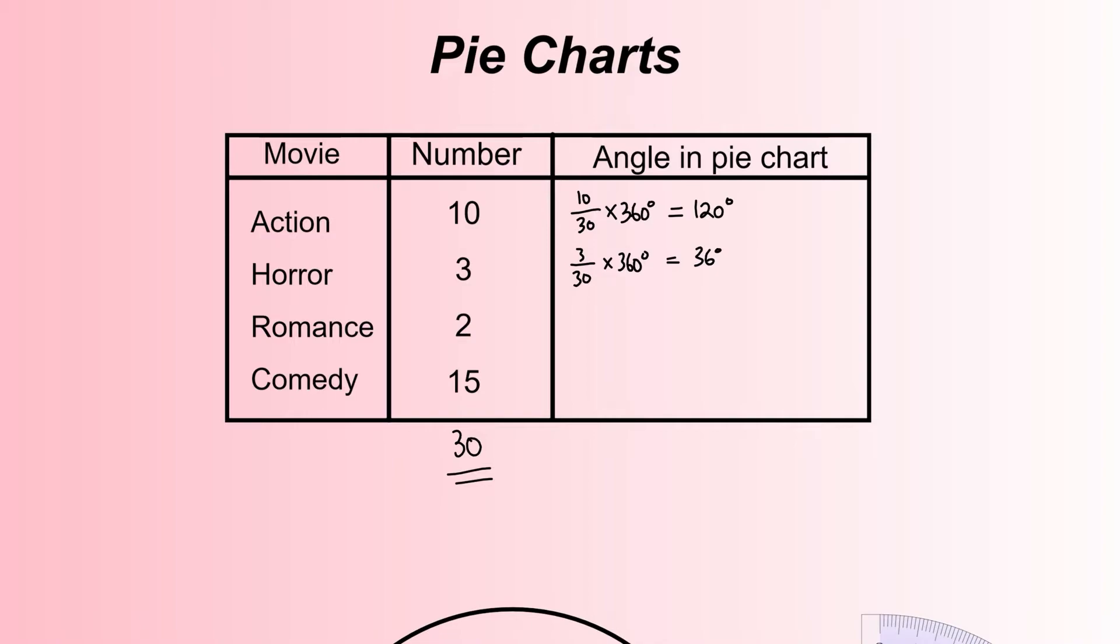Romance: 2 out of 30 times 360 gives you 24 degrees. The last one: 15 out of 30 times 360 gives 180 degrees.